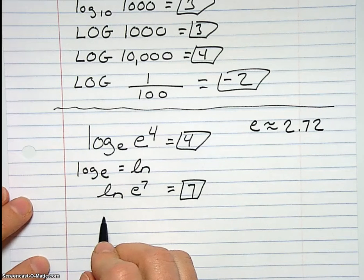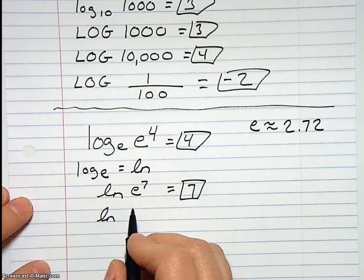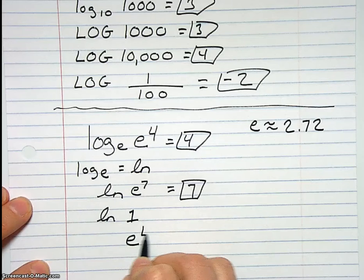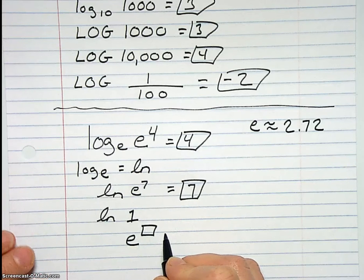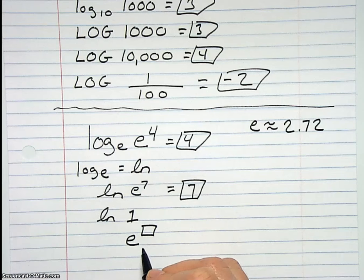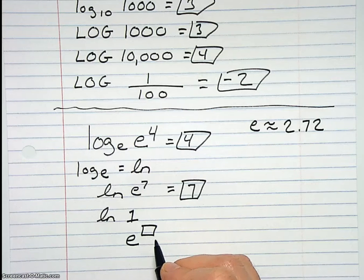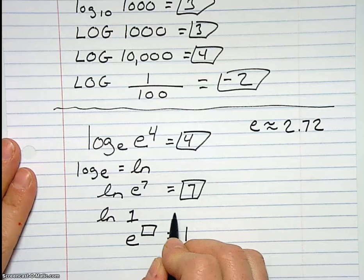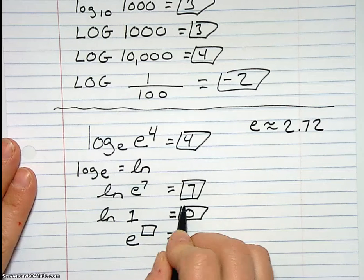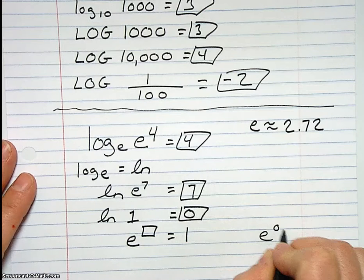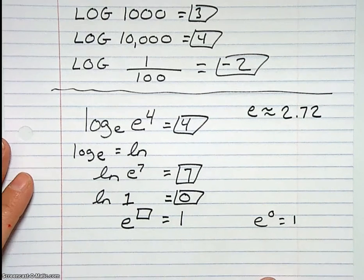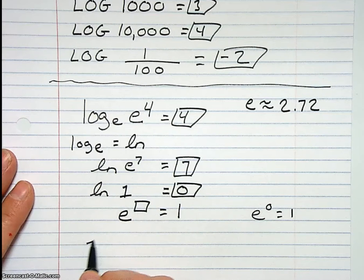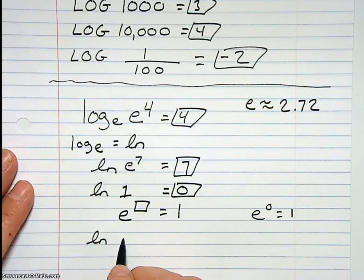Now let's do two that require you to think some. LN of 1 says E raised to what power is 1? So E is just a number. And what power do we need to raise things to for it to be equal to 1? 0. All right, so E to the what equals 1. Well, that what is a 0 because anything raised to the 0 power is 1, which we talked about way back when we did exponents.